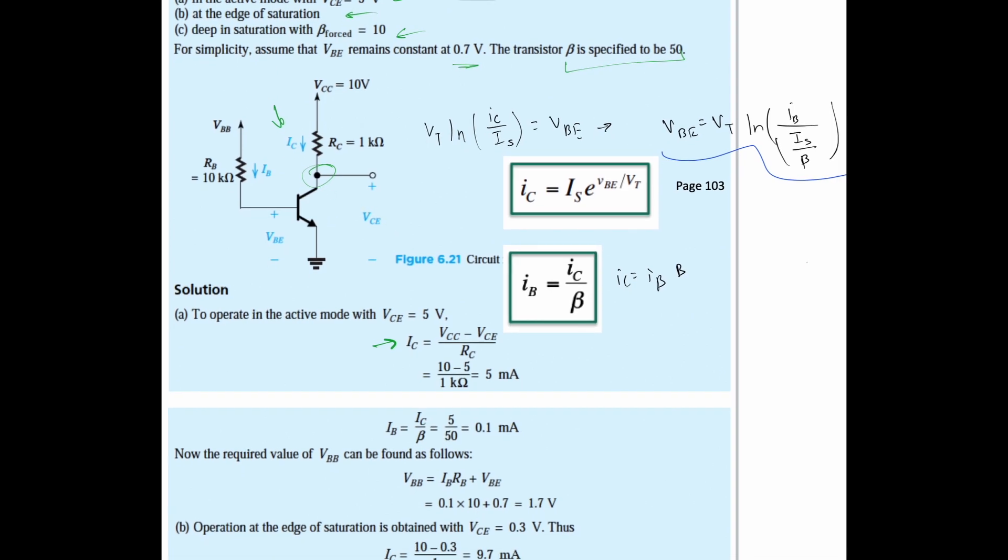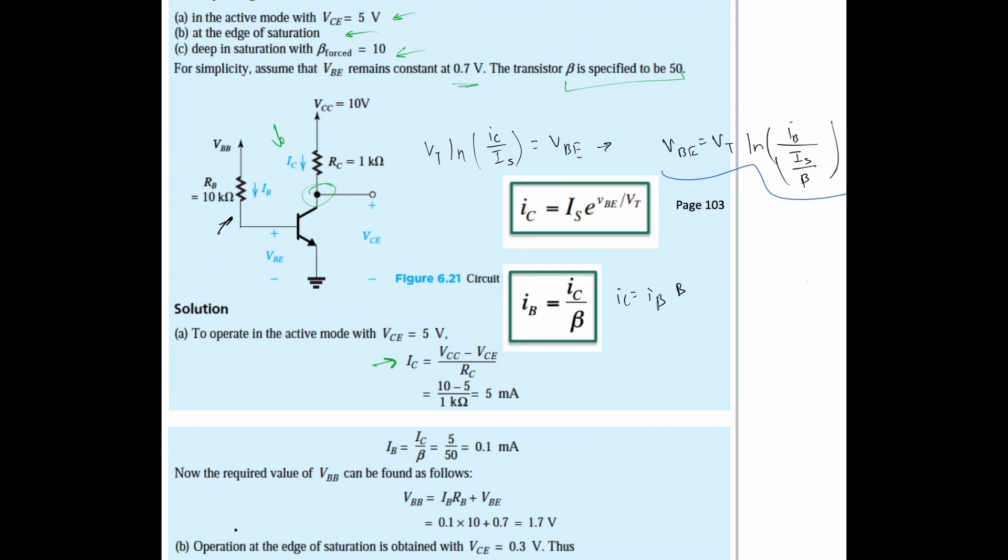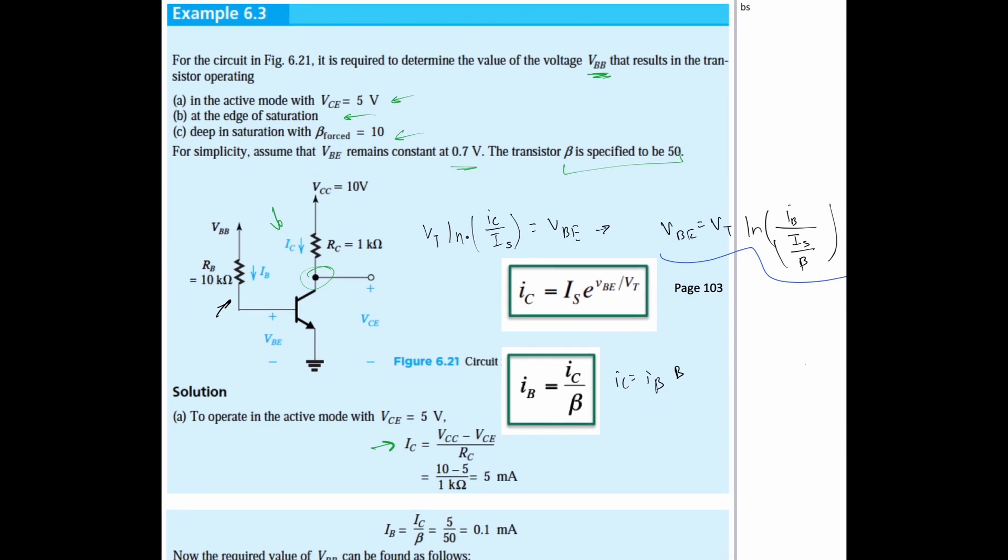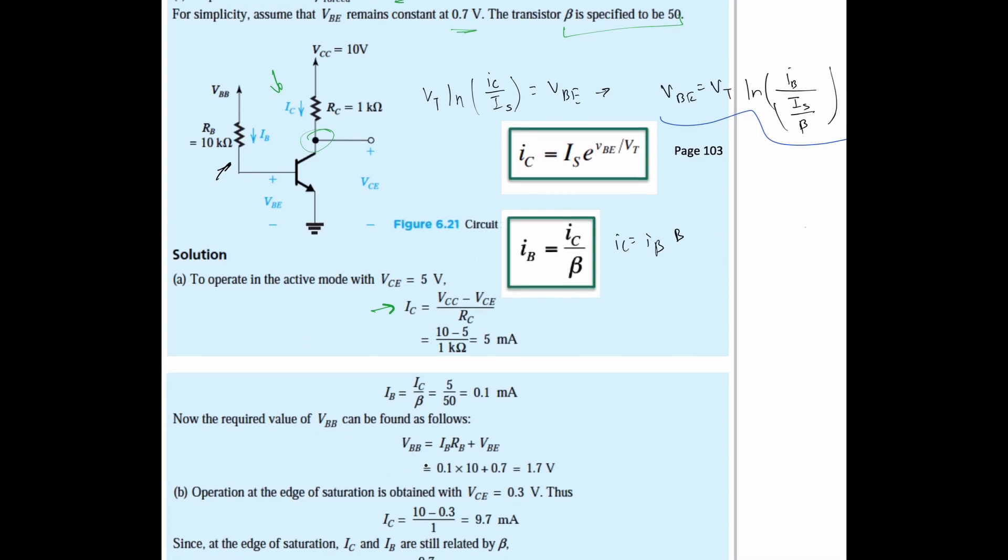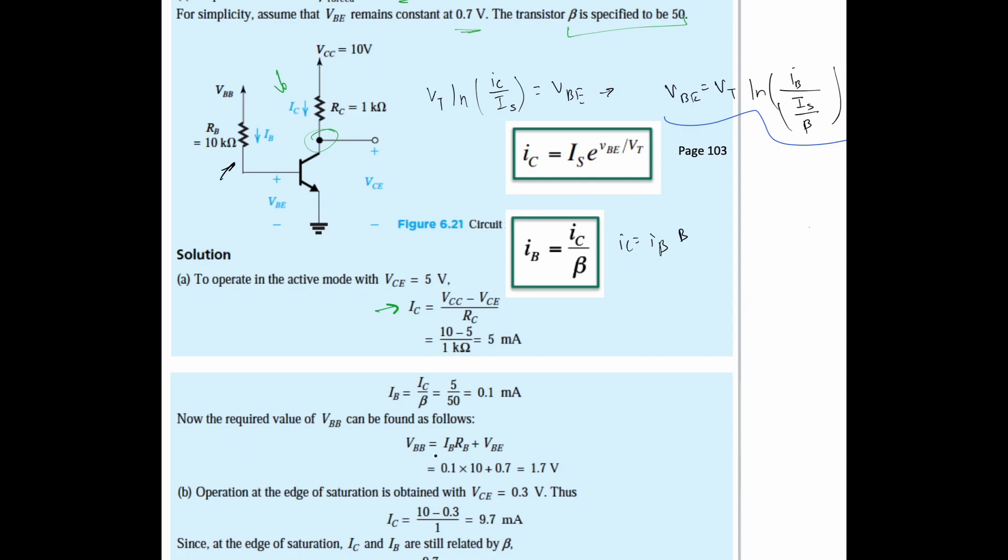Now the required value of VBB can be found as follows. The voltage right here that we want to find is the voltage of our BB that results in the transistor operating. We are going to use the formula where we have it equal to our IB times RB, then add the voltage of our base emitter.